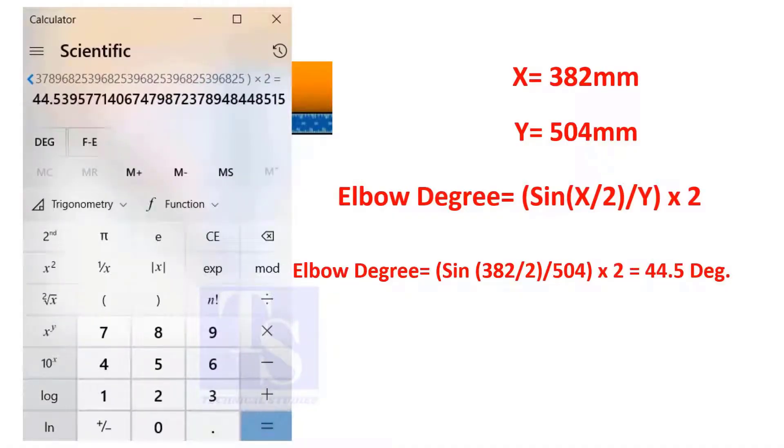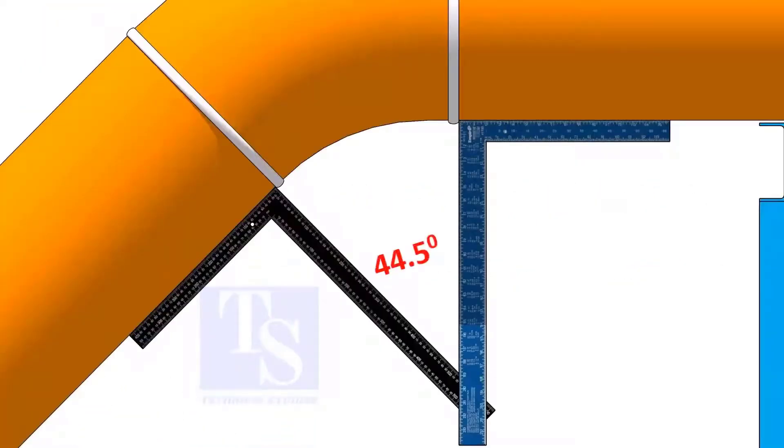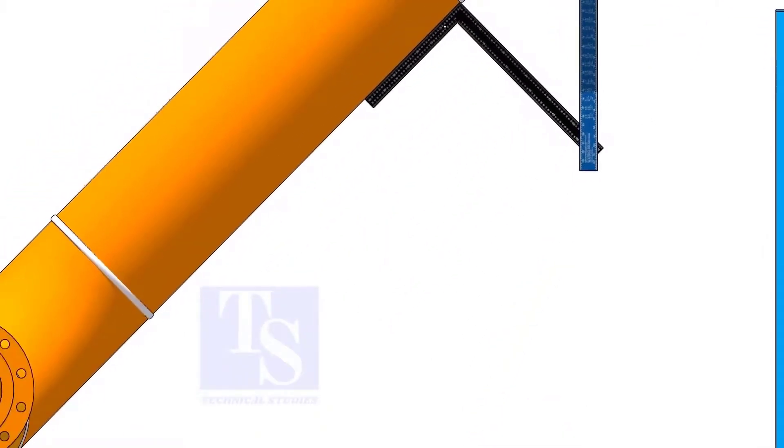In this example, the degree of the elbow is 44.5 degrees. Let's check one more elbow.